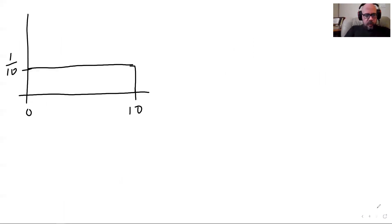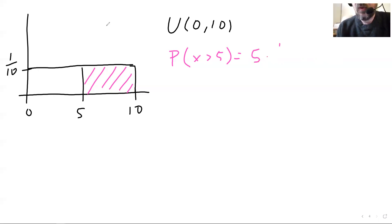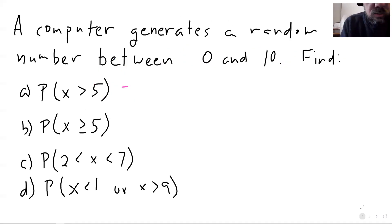This is a U(0,10) because I am picking a random number between 0 and 10. Five is in the middle here. I want to find the probability that X is greater than 5, so all this area over here that I am putting in pink. That is a rectangle. The base is 5 units long and the height is one tenth. So it is 5 times 1 over 10 or 5 over 10, which is a half.